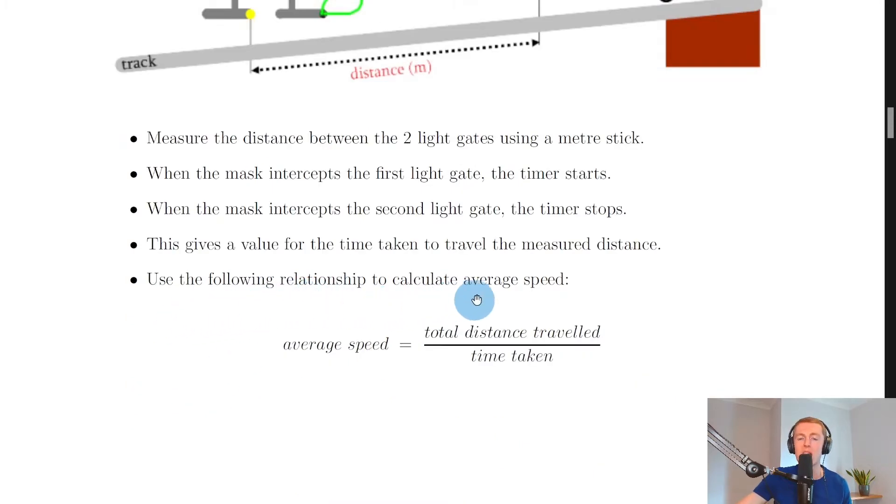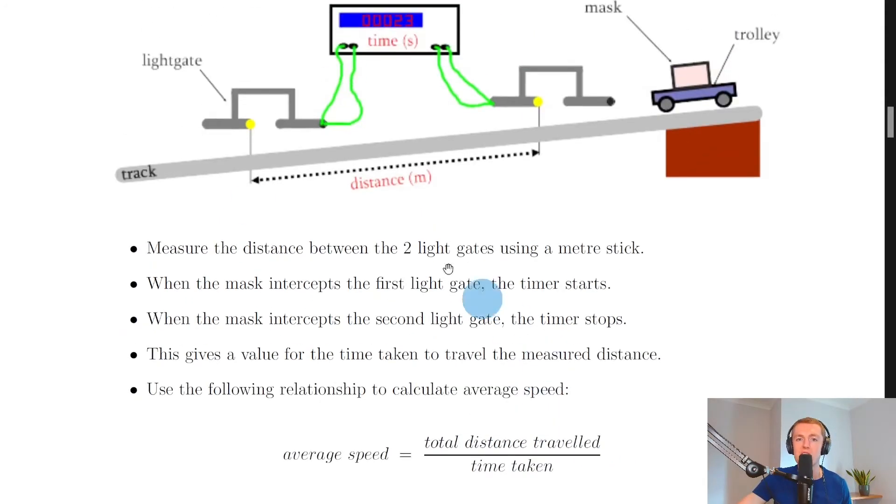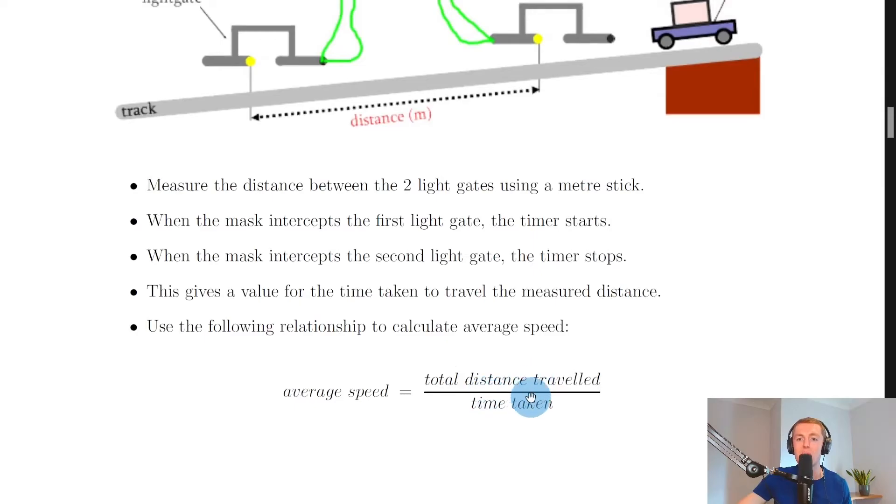This gives a value for the time taken to travel the measured distance. To calculate average speed, use the relationship: average speed equals total distance traveled over the time taken. You sub in your distance measured by the meter stick and the time given from the timer.